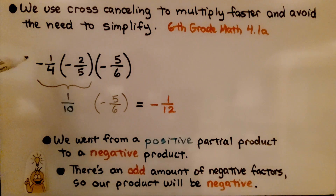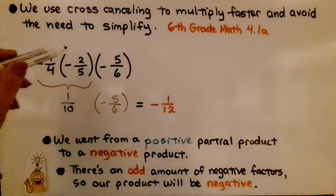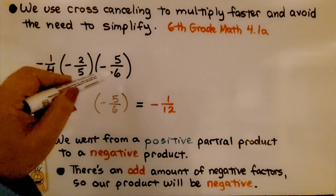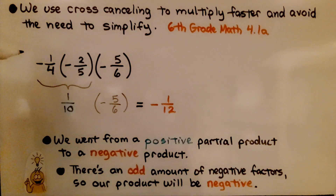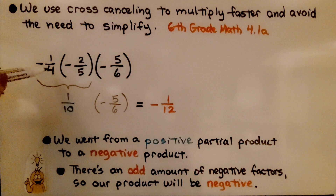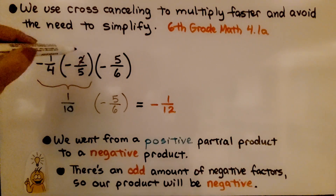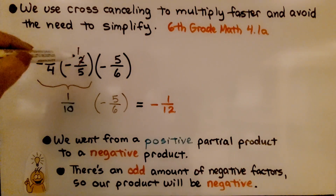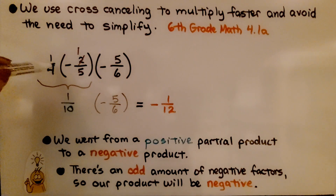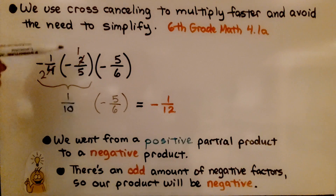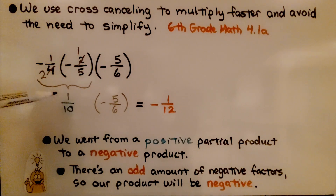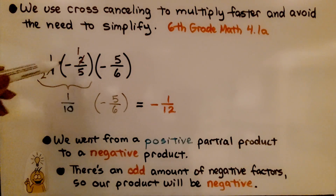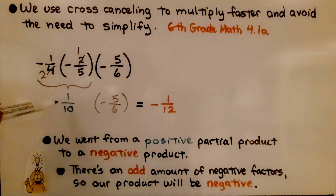If we have negative one-fourth times negative two-fifths times negative five-sixth, we can look at the one, the two, the four, and the five. The two in the numerator can cancel with the four in the denominator — there's one two here and two twos there. We end up with negative one-half times negative one-fifth, which is a positive one-tenth because they have the same sign.